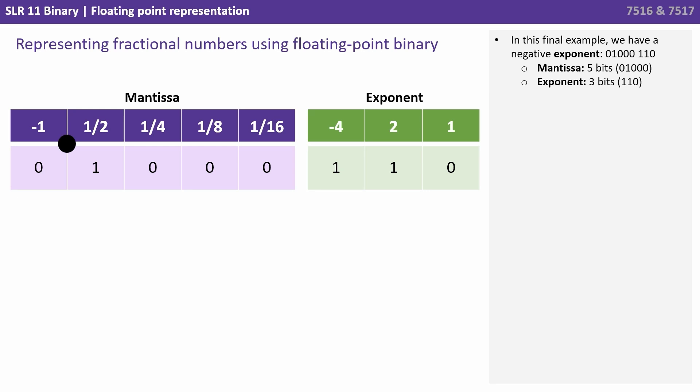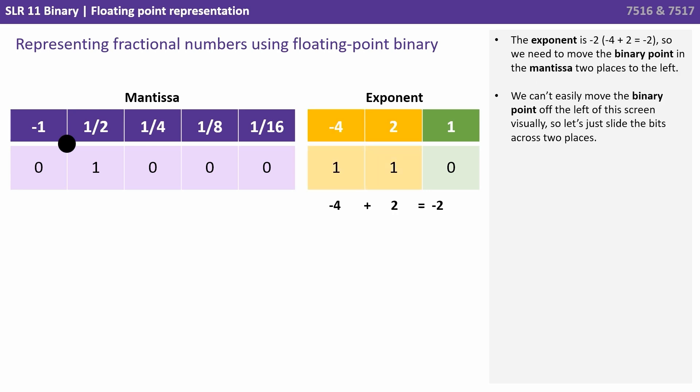In this final example we have a negative exponent. So our complete number is 0, 1, 0, 0, 0, 1, 1, 0. The first 5 bits for mantissa again and the final 3 for the exponent. Now the exponent is minus 2 because we've got a 1 in the minus 4 column and a 1 in the 2 column. Minus 4 plus 2 is minus 2. So we need to move the binary point of the mantissa two places to the left this time, whereas previously with positive exponents we were moving it to the right.